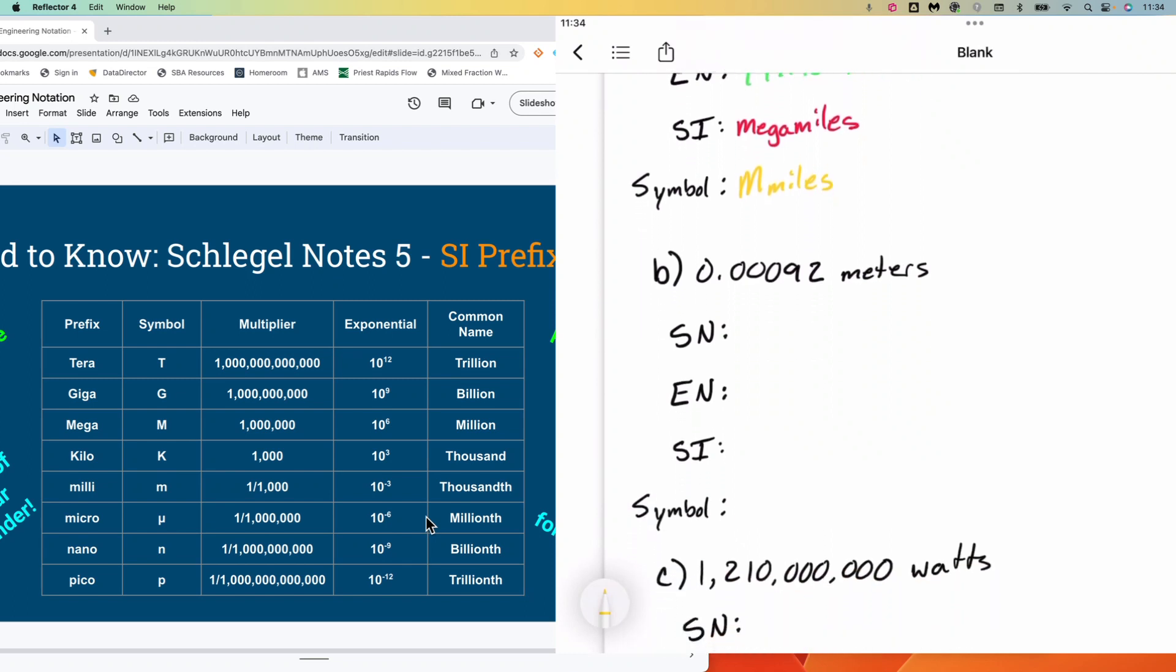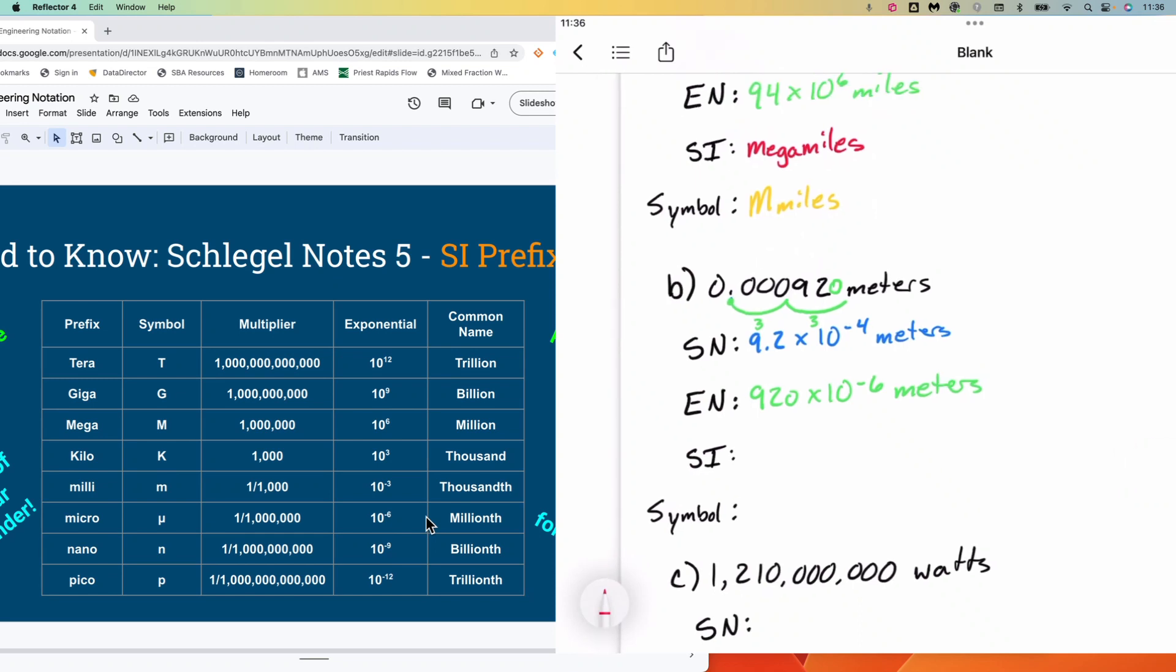So for part B, scientific notation again, we would start at the decimal and move one, two, three, four spots. So we would have 9.2 times 10 to the negative four meters. And negative because the decimal, this number is less than one. For engineering notation, we would have jumps of three again. So we're going to make a jump of three. And I don't have any numbers in front of the decimal. So I need to make a jump of three again. And I only jumped two, so I've got to add a zero there at the end to make it work. This is going to give me 920 times 10 to the negative six meters. And remembering that we are dealing with numbers that are less than 1000 or greater than one one thousandth. And so 920 fits that.